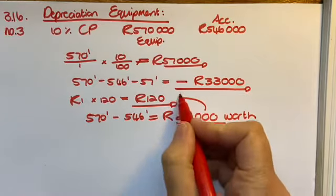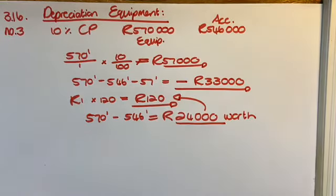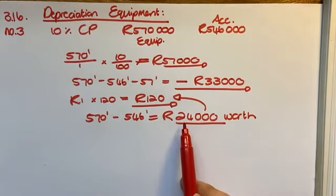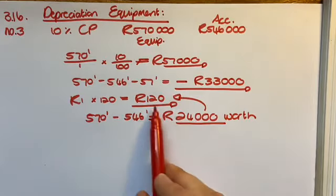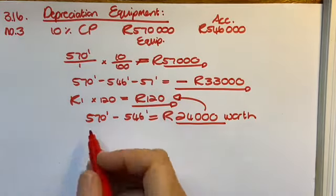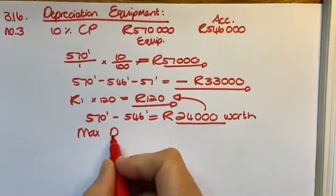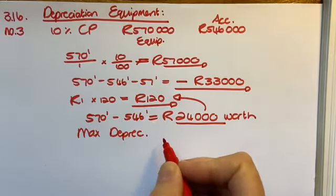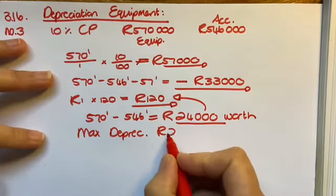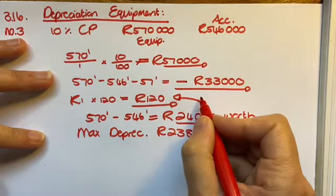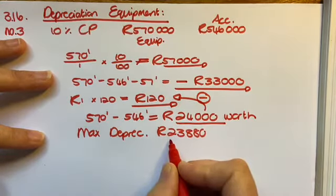Now know that I do still have to be left with 120. So you're going to say 24,000 minus 120. That means the max depreciation that I can do is 23,880. I can't go to 57,000, it's impossible.